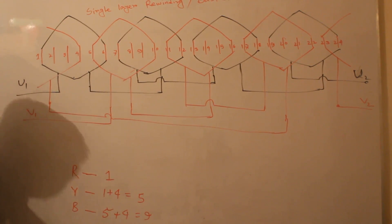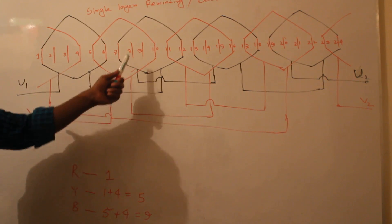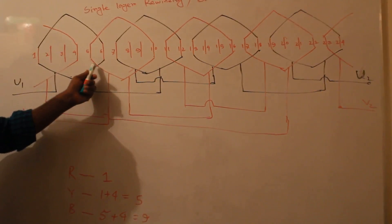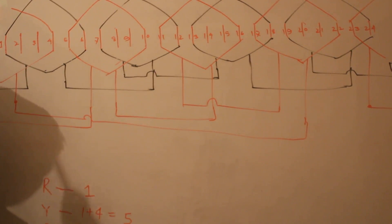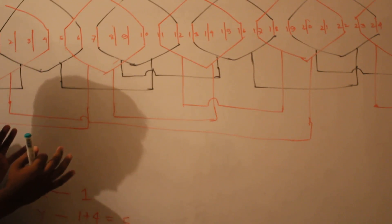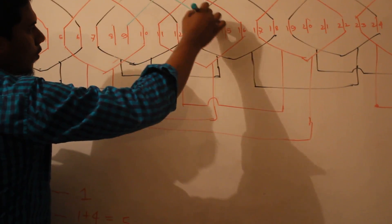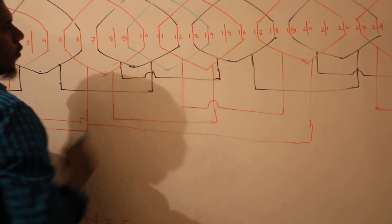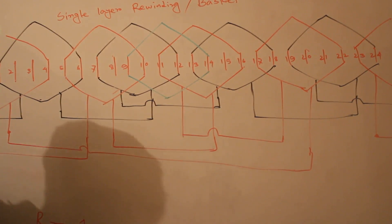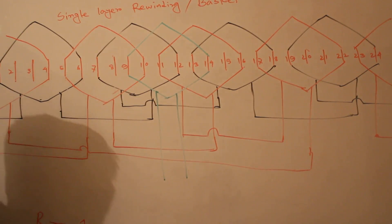This B-phase coil must start at slot 9 according to the phase difference. The first coil starts at slot 1, the second phase starts at slot 5, and now the third phase coil first start is slot 9. The coil span is 9 to 14 — counting 1, 2, 3, 4, 5, 6 — so the coil span is the same as the others. Each coil has one start side and one finish side.